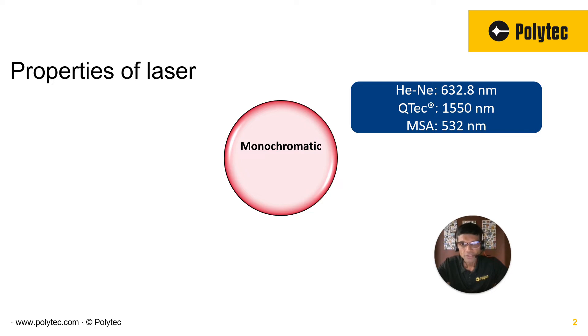Each laser source has a certain wavelength. For example, we use three different wavelengths for three different types of vibrometer systems. The helium neon, which has been around for a long time, uses 632.8 nanometers. The new version, the latest generation of vibrometer called Q-Tech, uses an IR laser source at 1550 nanometers. And for some of our microsystem analyzers, we use 532 nanometers because we are trying to achieve the smallest spot size possible. So monochromatic, that's number one.